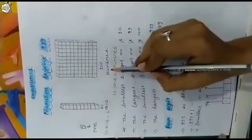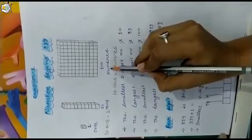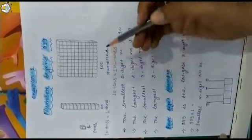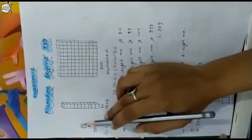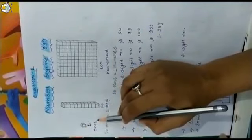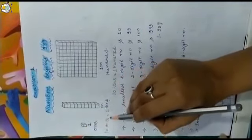You all know numbers from 1 to 999. The decimal system is based on groups of ones, tens, and hundreds. Here we are having one block which represents ones. When we group 10 ones together, we will get one ten.